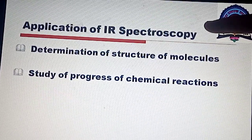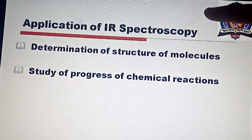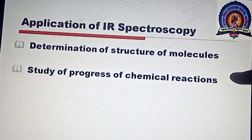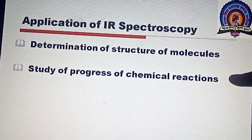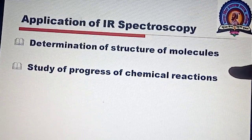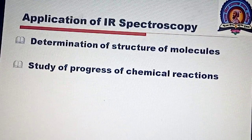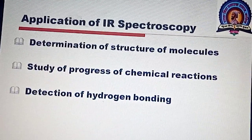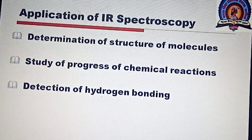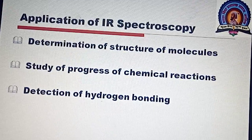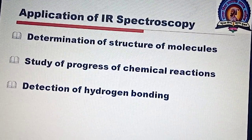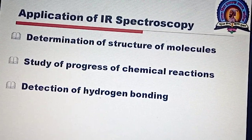Therefore, IR spectroscopy is a really important tool used to study the progress of chemical reactions — whether a reaction is completed or not can be monitored using IR spectroscopy. The third application of IR spectroscopy is that it is useful for detection of hydrogen bonding, specifically distinguishing between intermolecular and intramolecular hydrogen bonding and the free hydroxyl group.